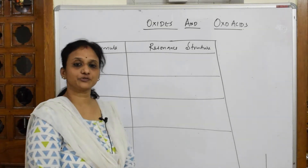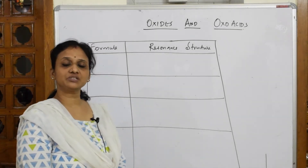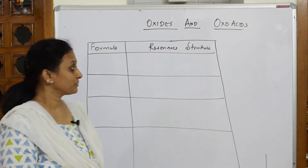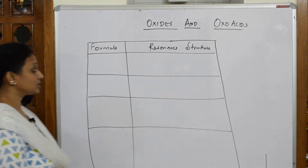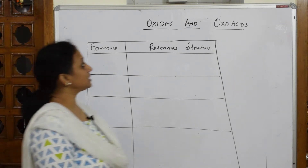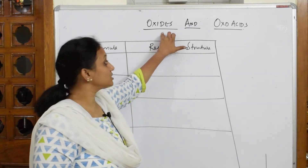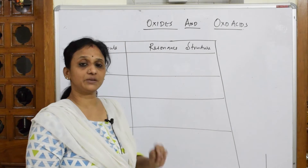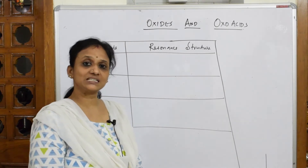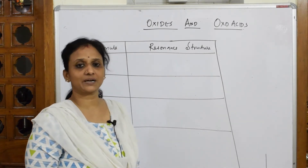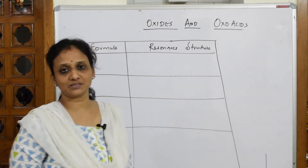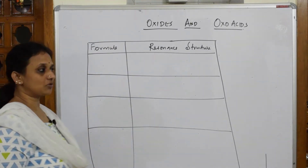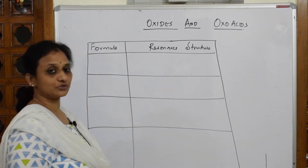We have studied the hydrides of group 15 elements and the halides of group 15. Now let's learn the oxides of group 15. When learning oxides, you are going to study the oxides of nitrogen and the oxo acids of phosphorus — very important structures. You have to first learn the structures, so please practice them; they are very important for your exam.